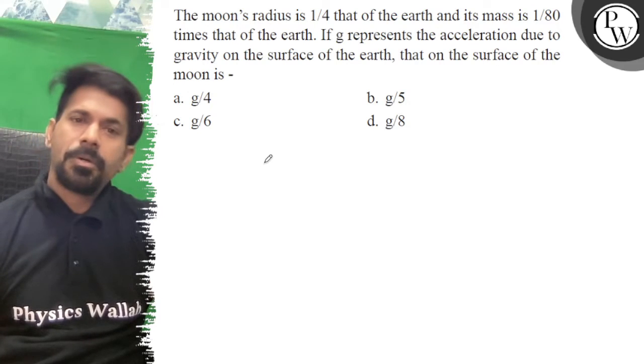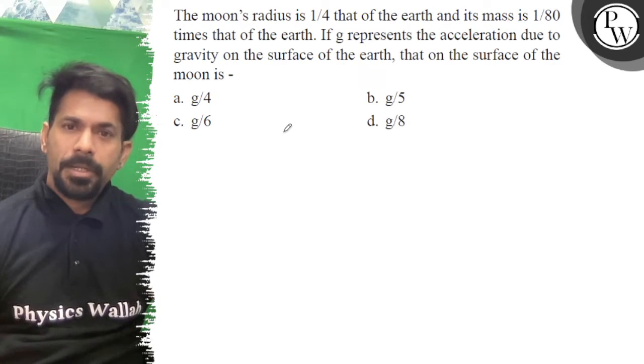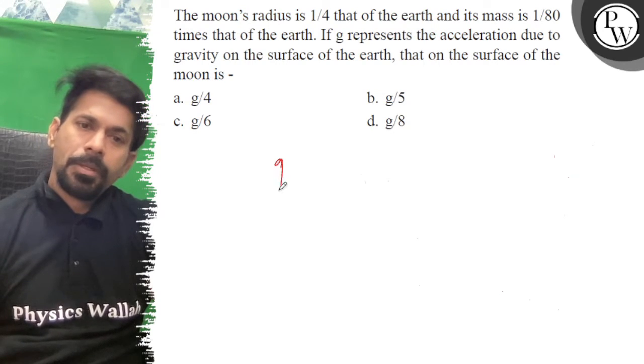The moon's radius is 1/4th of the earth and its mass is 1/80 times that of the earth. If g represents the acceleration due to gravity on the surface of earth, then on the moon is: